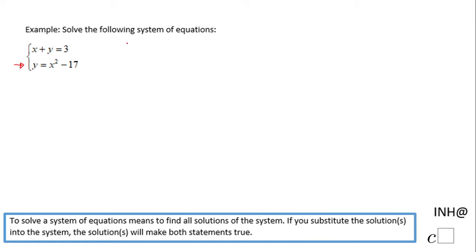The way I'm going to solve this one is by using substitution. I notice I have y equals, so that means I can take this y and replace the other y in the first equation. So the first equation becomes x plus, instead of y, we're going to put x square minus 17 equals 3.